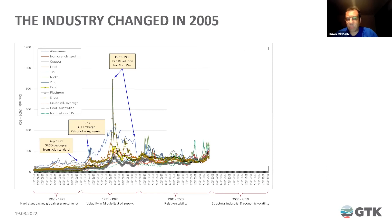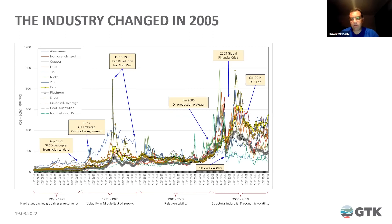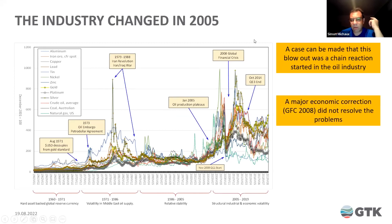There are two very important points here. We've got a relative period of stability, and around 2005 we had a blowout. The metal price is the handover point between those who extract metals from the ground and those who buy those metals and manufacture goods — so you're looking at the heartbeat of the industrial ecosystem. I make the case that this blowout started with a chain reaction in the oil industry, and the major economic correction in 2008 was not enough to resolve the underlying volatility.